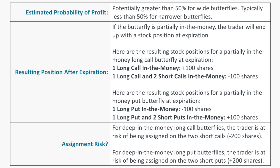The estimated probability of profit for a long butterfly spread can be greater than 50% for really wide butterflies, because they act more like a short straddle, which has an estimated probability of profit of around 50–60%. For narrower butterflies — which is probably the more common case — the probability of profit is estimated to be less than 50%, because you'll have a very narrow range of profitability. The resulting position after expiration depends on whether you're trading a call or put butterfly, and whether the spread is entirely or partially in the money.